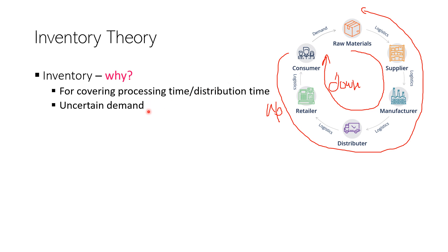The second reason is that demand is uncertain. We have seen that we are going to study deterministic models which assume demand is perfectly known, but this is not reality. In reality, no one knows what the demand will be tomorrow, next week, or next month. Because of this uncertain demand, retailers, distributors, and manufacturers tend to stock up inventories to cover for the uncertainty.